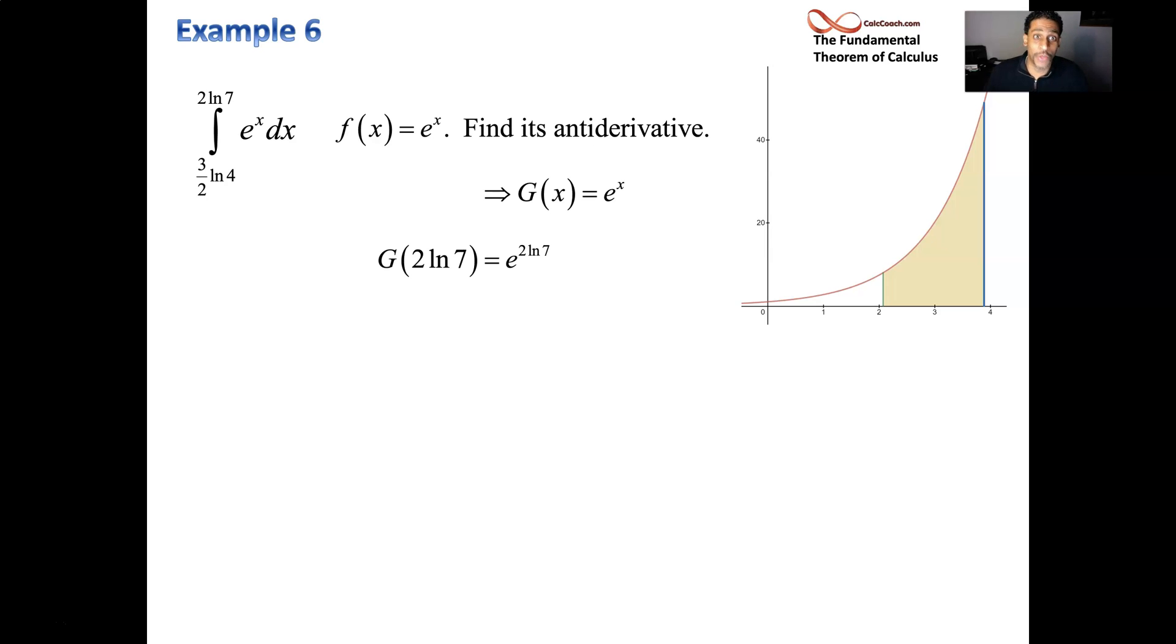What is e raised to the 2 log 7? You'd like to be able to cancel the e in the log, but not with that 2 there. You have to use a property of log first. The natural log, or even the log, or any kind of base, a log with any base, if you have a multiplier in front, what you want to do is bring that up as the exponent on the inside. And so that 2 comes up and becomes the exponent on 7. We'd have e to the natural log of 7 squared. And now we can cancel. It's just 7 squared: 49.